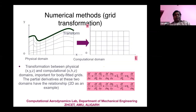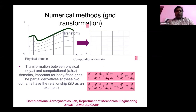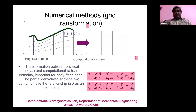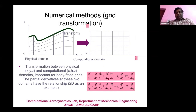In the structured transformation approach, the body is transferred to a computational domain of [0,1]×[0,1]. To work in this domain, you change the derivative ∂f/∂x to (∂ξ/∂x)(∂f/∂ξ) using the chain rule, where ξ is the computational coordinate. This coordinate transformation allows the governing equations to be solved on the simple rectangular computational domain.